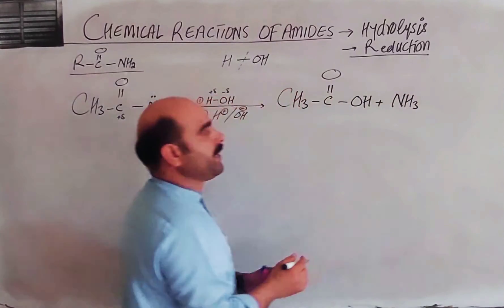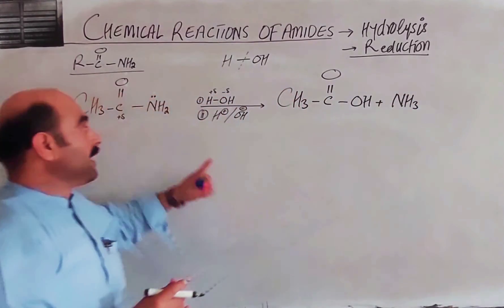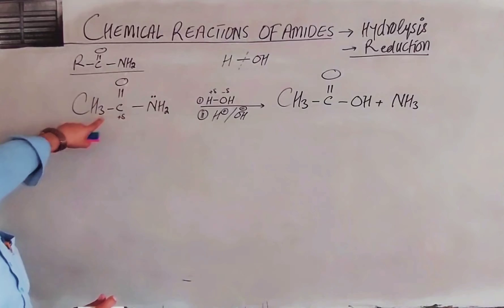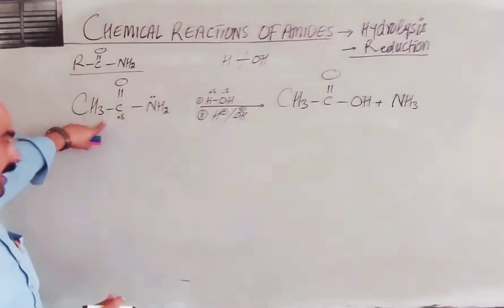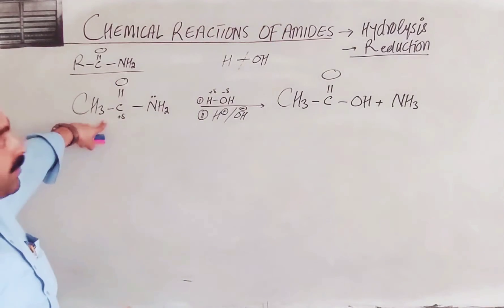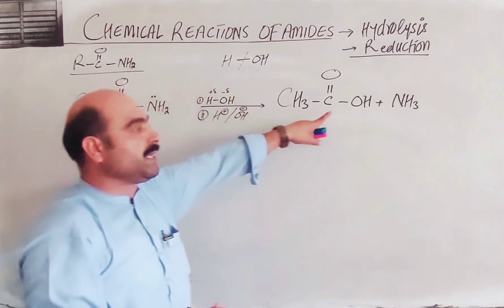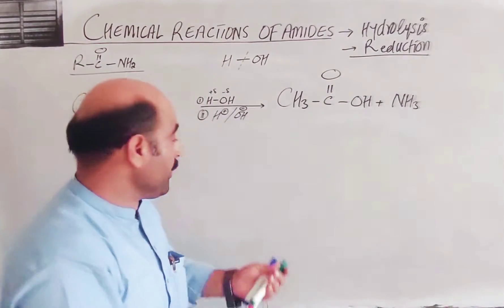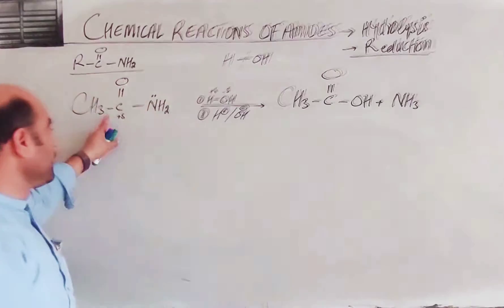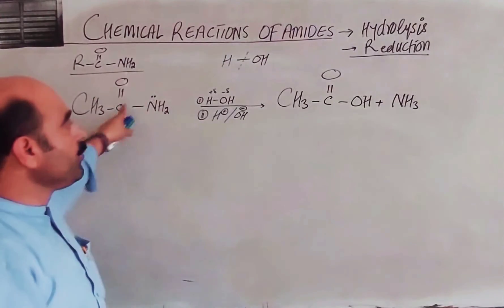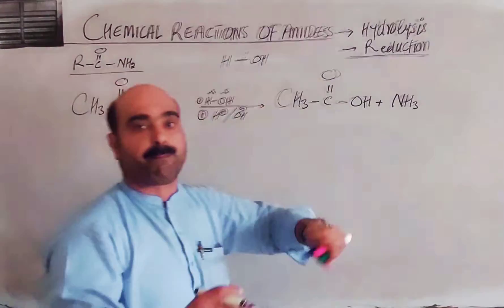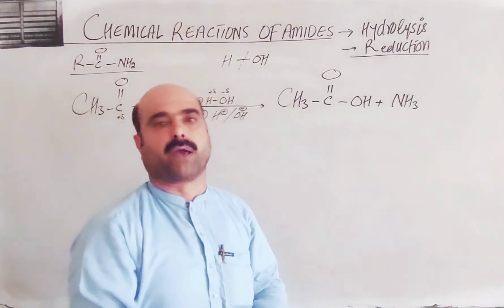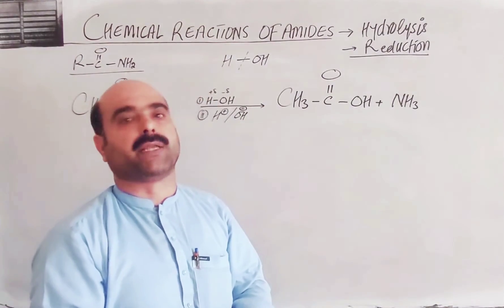That is the overall reaction, so amide hydrolysis gives carboxylic acid as the product. We use carboxylic acids — the parent compound is carboxylic acid. This is the hydrolysis of amide, which is the conversion of amide into carboxylic acids. The second reaction is reduction.